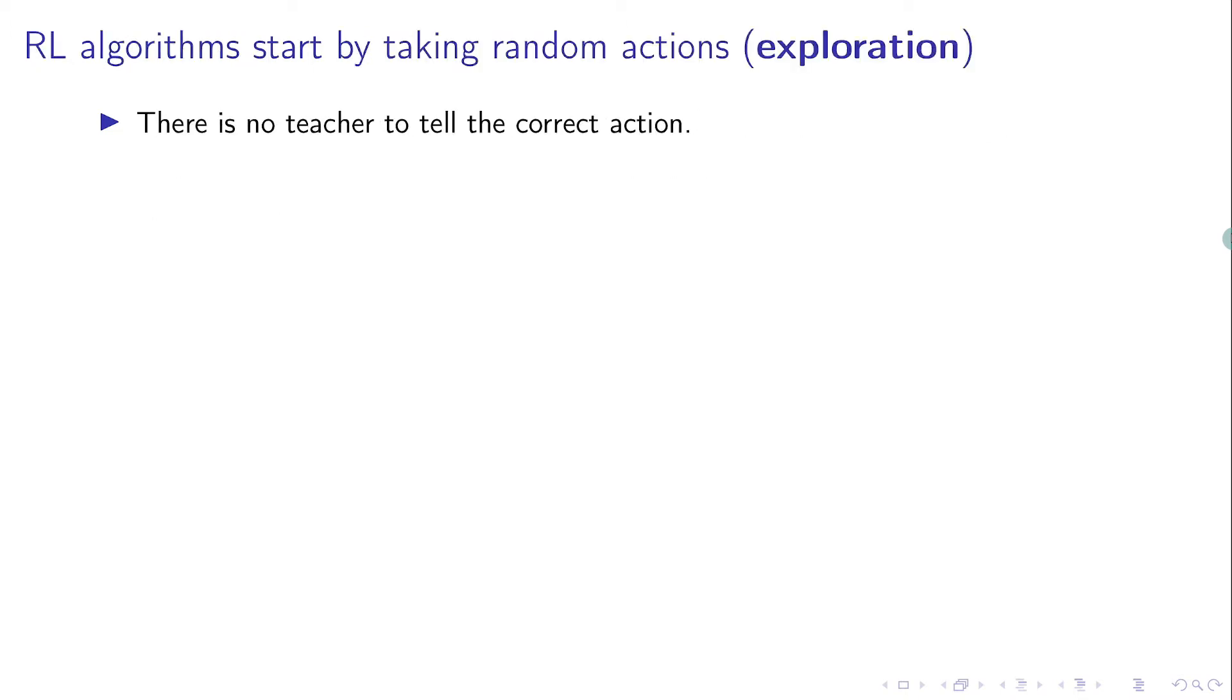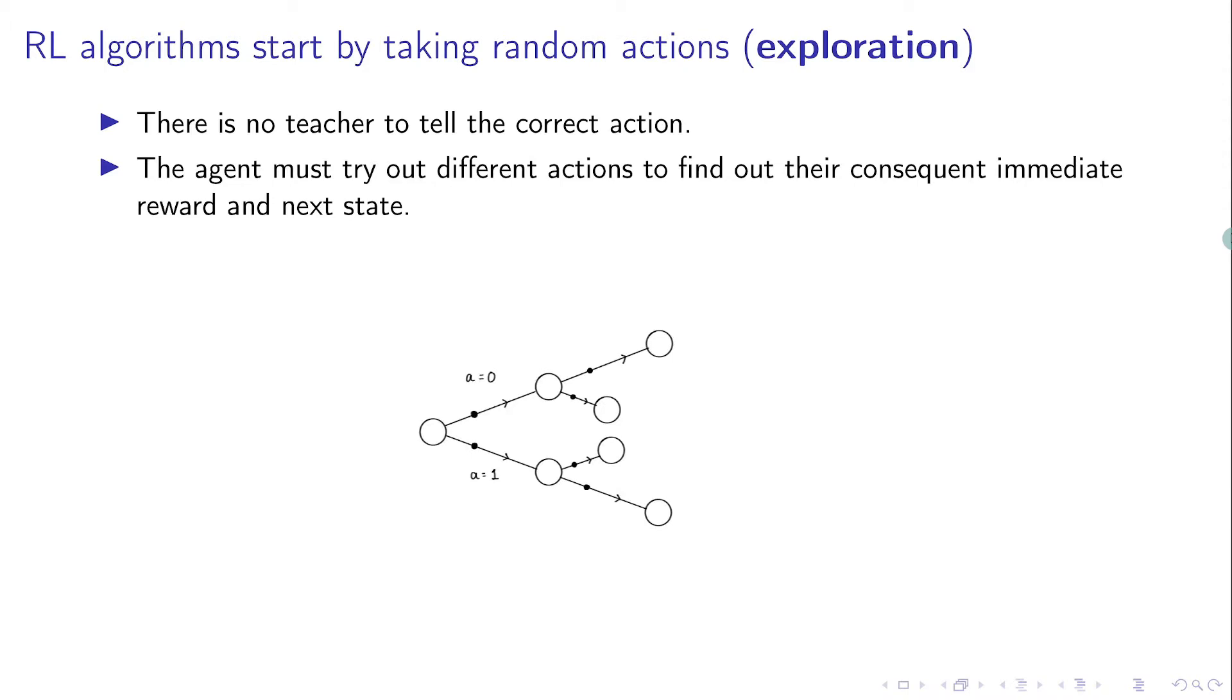Remember that in the reinforcement learning setting, there is no teacher to tell the correct action. The agent must try out different actions to find out their consequences. Let's take the example of CartPole V1, which has two actions.